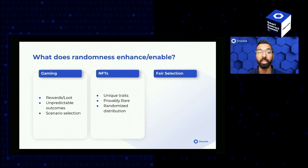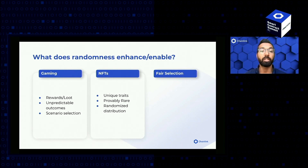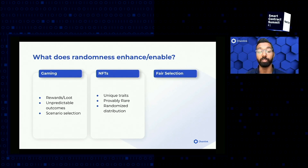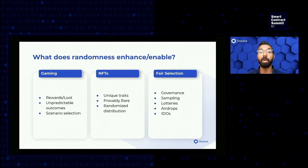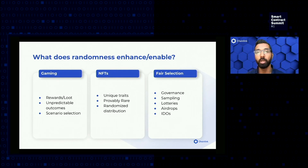From the NFT side of things, you can allocate unique traits in an unbiased manner. Not only can you make them provably rare, but also unpredictable ahead of time, and randomize distribution of your NFTs such that those receiving them are fairly receiving them without having a biased input as to who gets access to a new NFT. From a fair selection perspective, being able to prove your selection process is fair is critical — when selecting members for governance, inspecting a subset of representative data, selecting winners, randomizing airdrops, or randomizing your IDO allocations. There are endless ways in which randomness can be used to enhance your application or enable entirely new applications that are not possible without the ability to verifiably prove outcomes are fair.